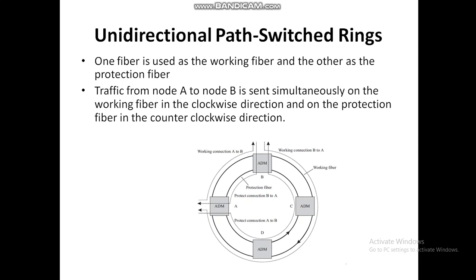This is essentially like the 1+1 scheme studied earlier, except that it operates at the path layer in the ring rather than at the line layer in a point-to-point configuration. It does not efficiently reuse fiber capacity, because each connection uses capacity on every link in the ring with dedicated protection bandwidth associated with it. Thus there is no sharing of the protection bandwidth between connections.